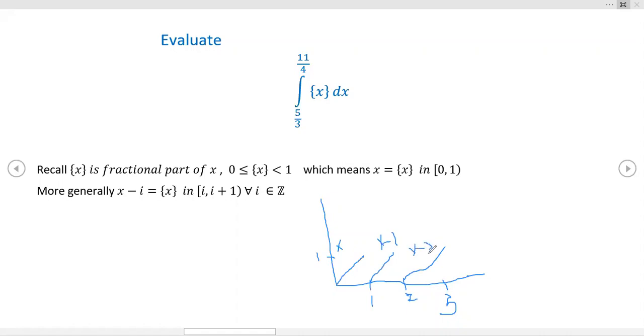But notice that that's exactly this form right here. Notice how x minus i, you're in the interval i to i plus 1. That's exactly what's going on here. i would be 1 right here. This would be the interval 1, 2. i would be 2 right here. This would be the interval 2, 3. And so what you get is these actually form triangles.